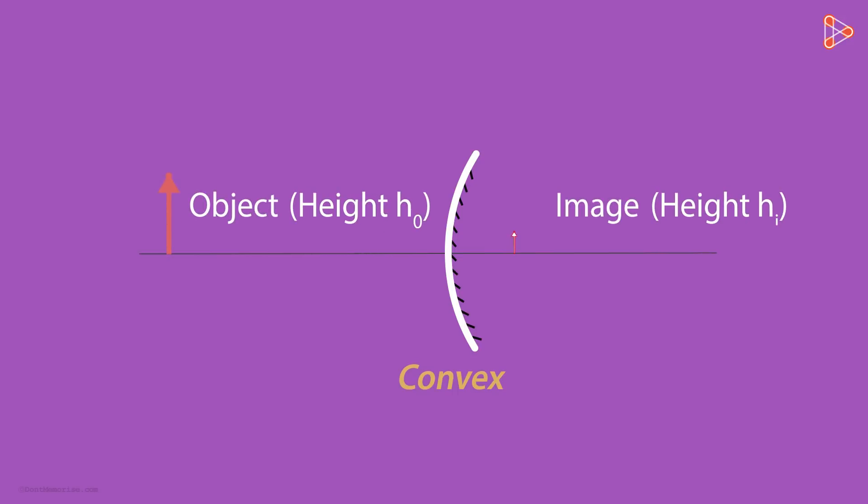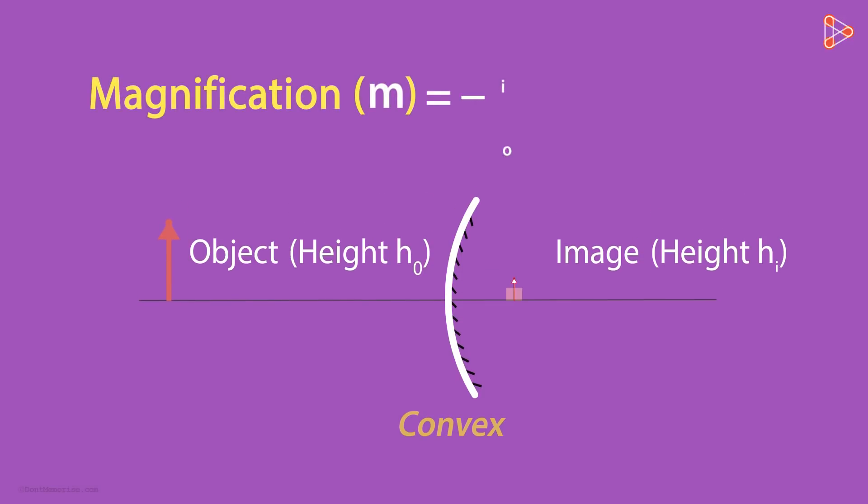Let's move to a new page. In our ray diagram, the sizes of the object and the image are nothing but the heights of the object and the image. So M will be equal to HI over HO.